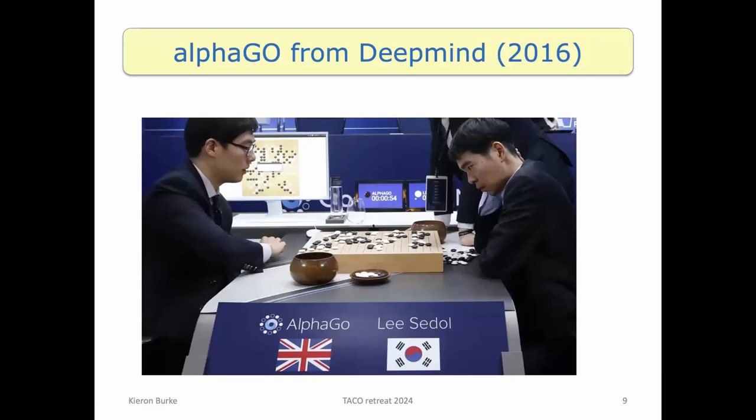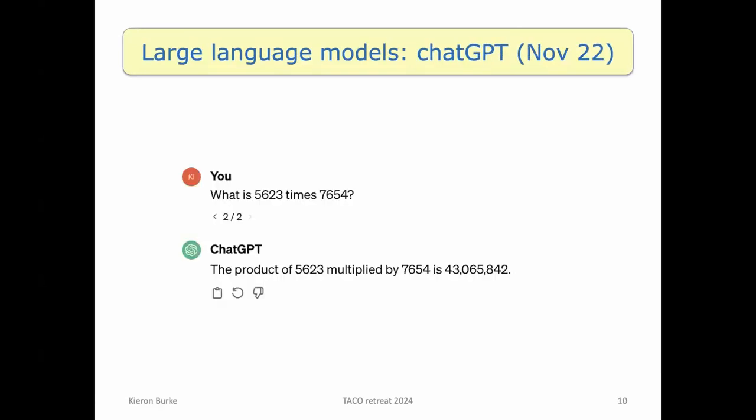This is only eight years ago, right, when DeepMind creates an algorithm, machine learning algorithm called AlphaGo, which beats one of the world Go masters. And after they do that next year, Lee Sedol retired because the machine could beat him. But now he consults I think for various companies developing machine learning algorithms like DeepMind.